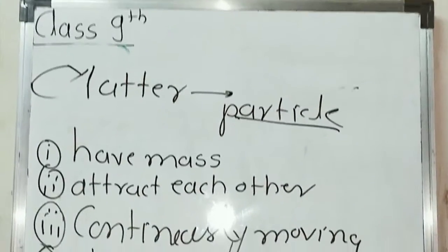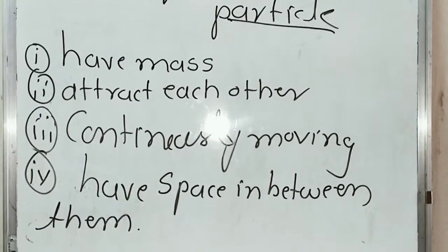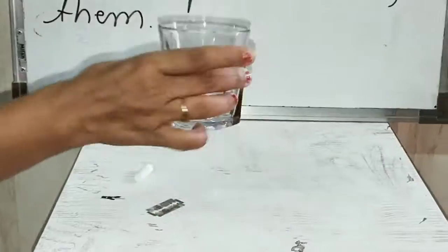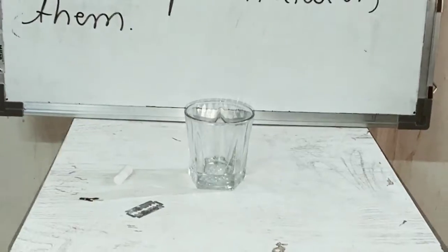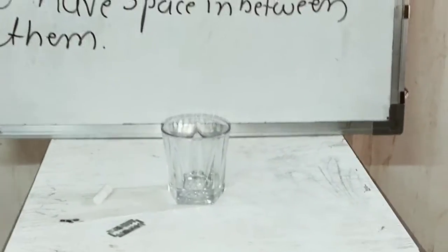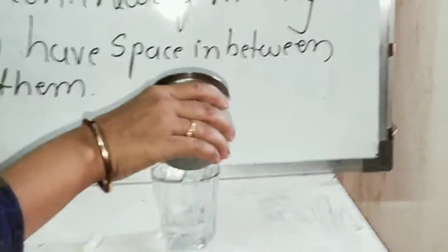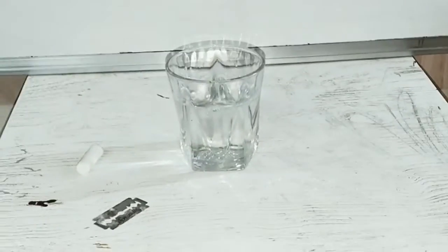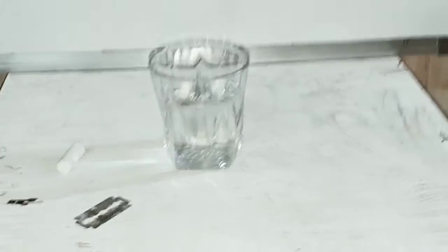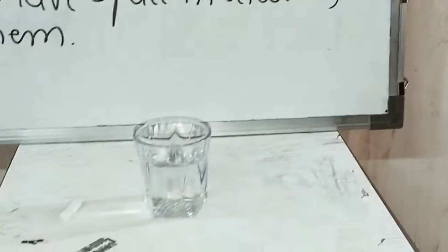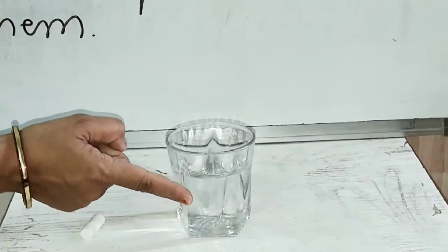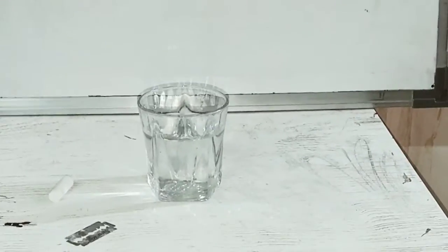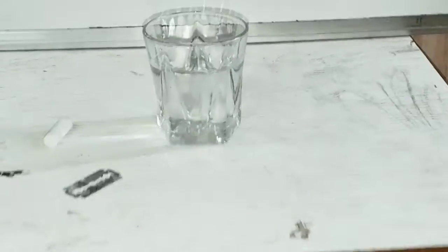I am going to perform activity number three. Take this glass — the glass is empty. In this glass, I pour some water. Observe it carefully. In this glass, all the particles are in a continuously moving motion. If particles are not moving, then what happens?